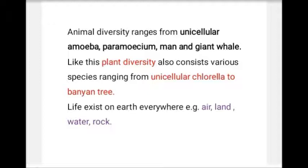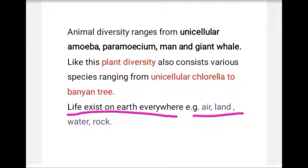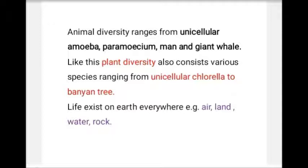During evolution, from simple compounds, complex compounds formed, then cells, then multicellular organisms. This is how all the diversity present on Earth today — whether plants or animals — came about due to evolution. This diversity has spread across the entire Earth: in air, on land, in water, and in rocks. Life forms are present everywhere, whether in the form of microbes, animals, insects, or plants — all this diversity is due to evolution.